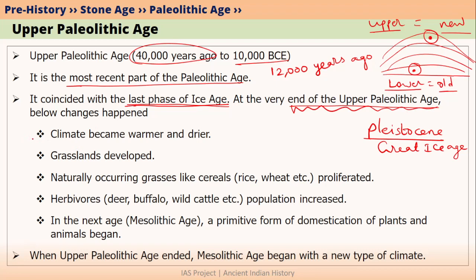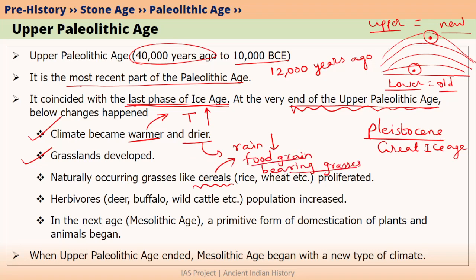The first climate change was that Ice Age ended, so climate became warmer and drier — temperature increased and rainfall decreased. Because of this, grasslands developed in many regions. Within the grasslands, some naturally occurring grasses had food grains; these are called cereals — for example, rice, wheat, barley, corn, maize, and oats. When grasslands developed, cereals proliferated, growing more and more in many places.